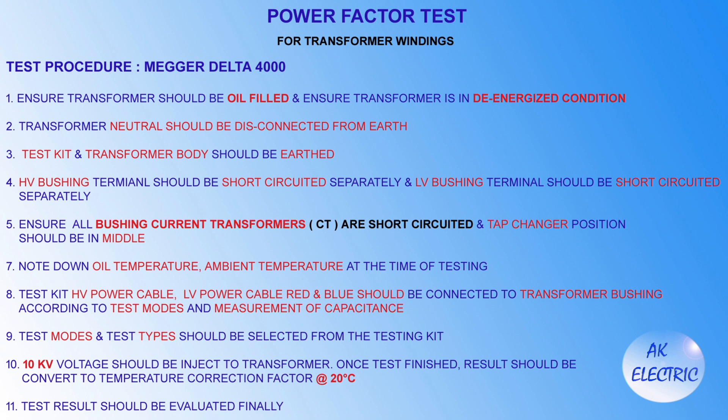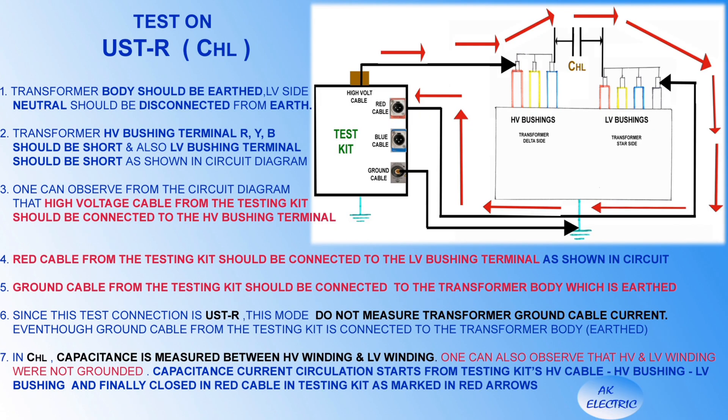The test kit, HV power cable, LV power cable, and red and blue cables should be connected to the transformer bushing according to the test mode and measurement of capacitance. Test modes and test types should be selected from the testing kit. 10 kV voltage should be injected to the transformer. Once the test is finished, the result should be corrected to a temperature correction factor at 20 degrees Celsius. Finally, the test result should be evaluated.